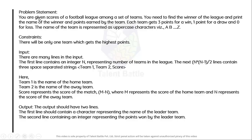The given problem statement is: you are given scores of a football league among a set of teams. We have to find the winner of the league and print the name of the winner as well as the points earned by that respective team. Each team gets three points for a win, one point for a draw, and zero points for a loss.